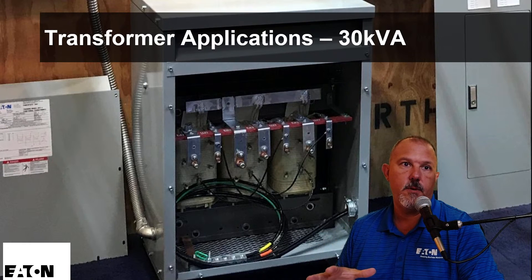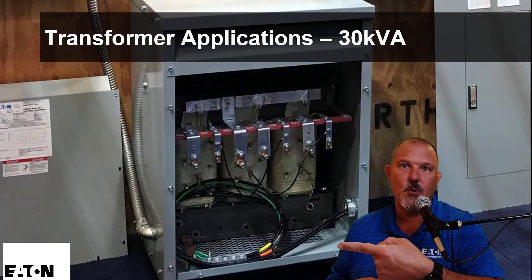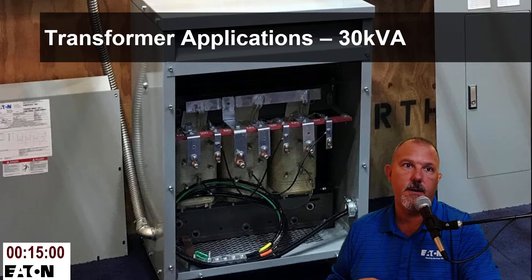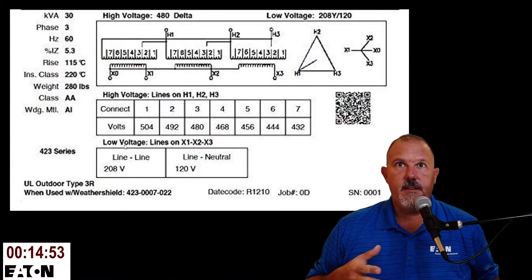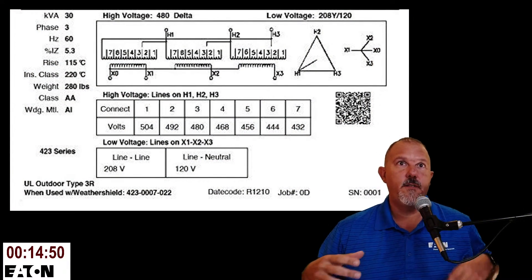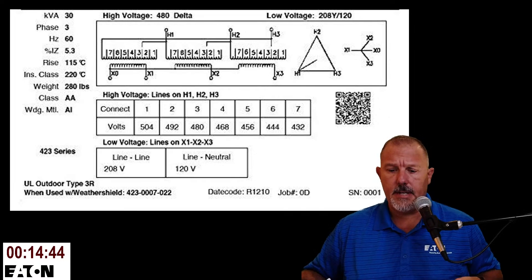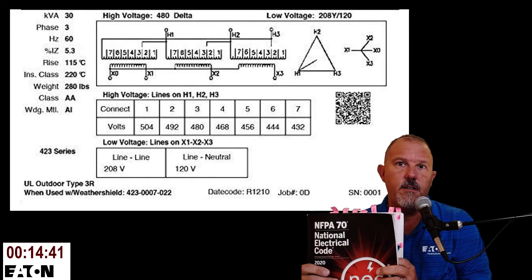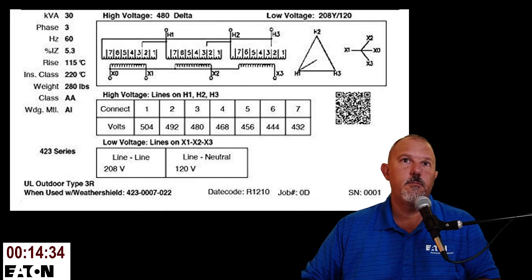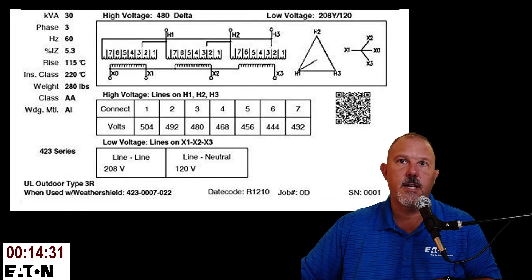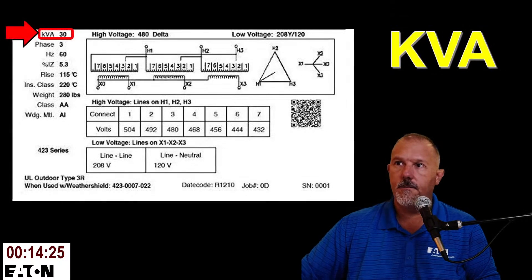We're set up with the PowerPoint in presentation mode with 15 minutes on the clock. This is the nameplate for the 30 KVA transformer — everything we need for this exercise is on that nameplate. We'll be referencing the 2020 version of the National Electrical Code, so hopefully you have your code book out.